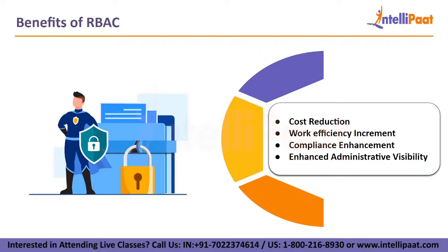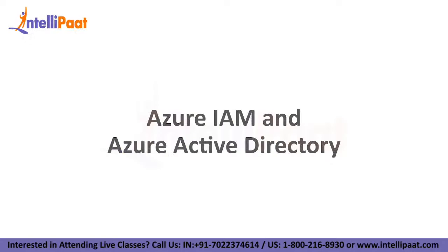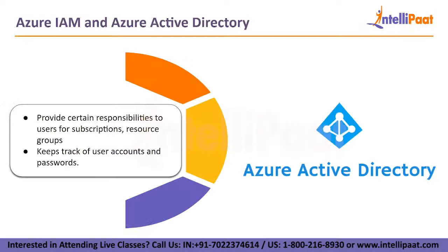In Azure Subscriptions, Identity Access Management is referred to as the role-based access control system. It lets you provide certain responsibilities to users for subscriptions, resource groups, and individual resources. Whereas Azure Active Directory is a more comprehensive identity management solution. It lets you manage people and programs, as well as their access to those applications. It's a database or live directory that keeps track of users, accounts, and passwords.